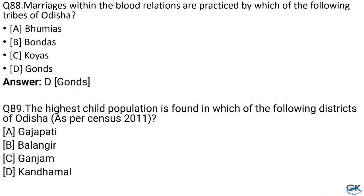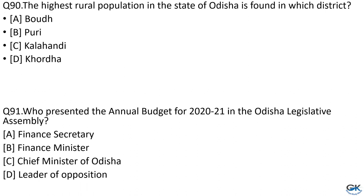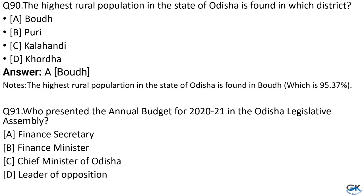Question No. 89: The highest child population is found in which district of Odisha? Option A: Gajapati. Option B: Bolangir. Option C: Ganjam. Option D: Kandhamal. The answer is Option C, Ganjam. Question No. 90: The highest rural population in Odisha is found in which district? Option A: Boudh. Option B: Puri. Option C: Kalahandi. Option D: Khordha. The answer is Option A, Boudh — which has 95.37% rural population.